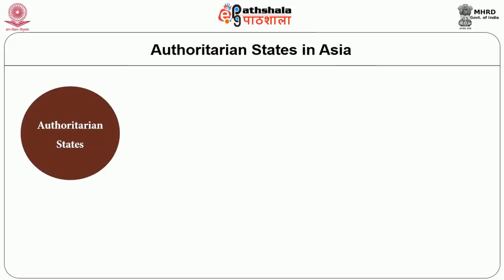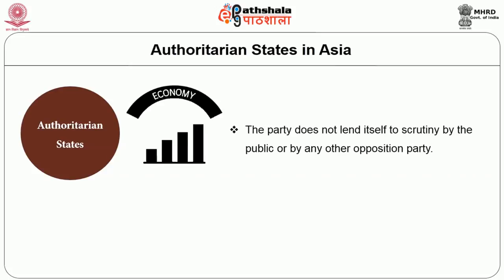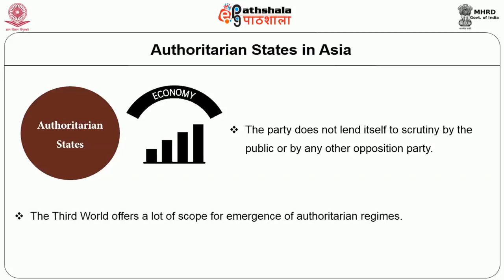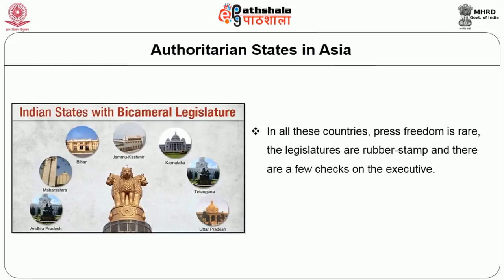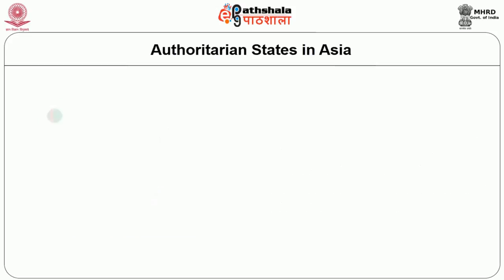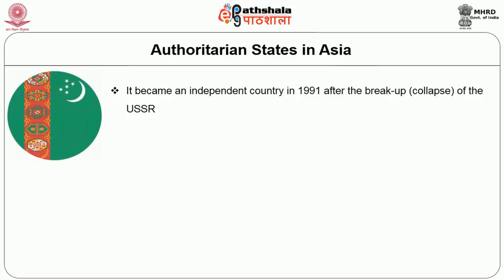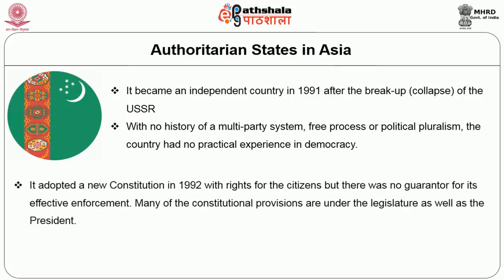The authoritarian state makes a deliberate effort to increase economic growth but does not stress economic and social rights. The party does not lend itself to scrutiny by the public or any opposition party. The third world offers a lot of scope for the emergence of authoritarian regimes — the chief characteristic of third world power systems is the relative lack of power anywhere in the system. In all these countries, press freedom is rare, legislatures are a rubber stamp, and there are few checks on the executive. Turkmenistan became an independent country in 1991 after the breakup of the USSR. With no history of a multi-party system or free political pluralism, the country has no practical experience of democracy. It adopted a new constitution in 1992 with rights for citizens, but there was no guarantor of effective enforcement.